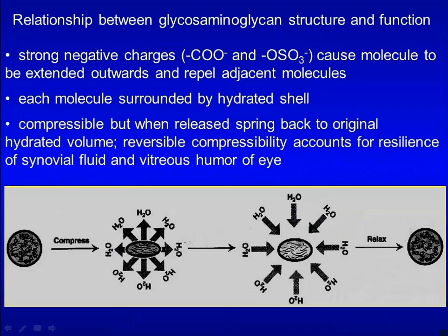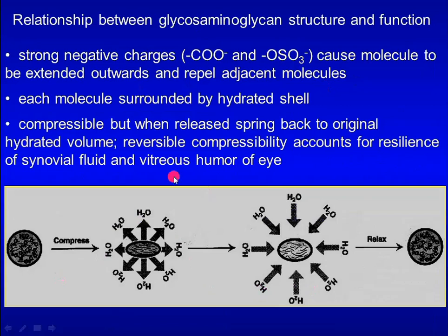Glycosaminoglycans contain carboxyl groups and sulfate groups. Strong negative charges cause molecules to be extended outwards and repel adjacent molecules. Each molecule is surrounded by a hydrated shell. They are compressible, but when released, spring back to their original hydrated volume. Reversible compressibility accounts for the resilience of synovial fluid and vitreous humor of the eye.